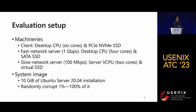I will now explain our evaluation. We used one client device and two different servers. The client device features a typical six-core desktop CPU and one PCIe NVMe SSD. One server is within the local area network with one gigabit per second bandwidth, featuring a four-core desktop CPU and SATA SSD. The second server is a virtual machine in Azure connected to the client via a 100 megabit per second wide area network, featuring a two-core server-class virtual CPU and virtual SSD. As a system image, we used a 10 gigabyte Ubuntu server installation, and we randomly corrupted 1% to 100% of this image to evaluate recovery time and runtime overhead according to the corruption ratio.